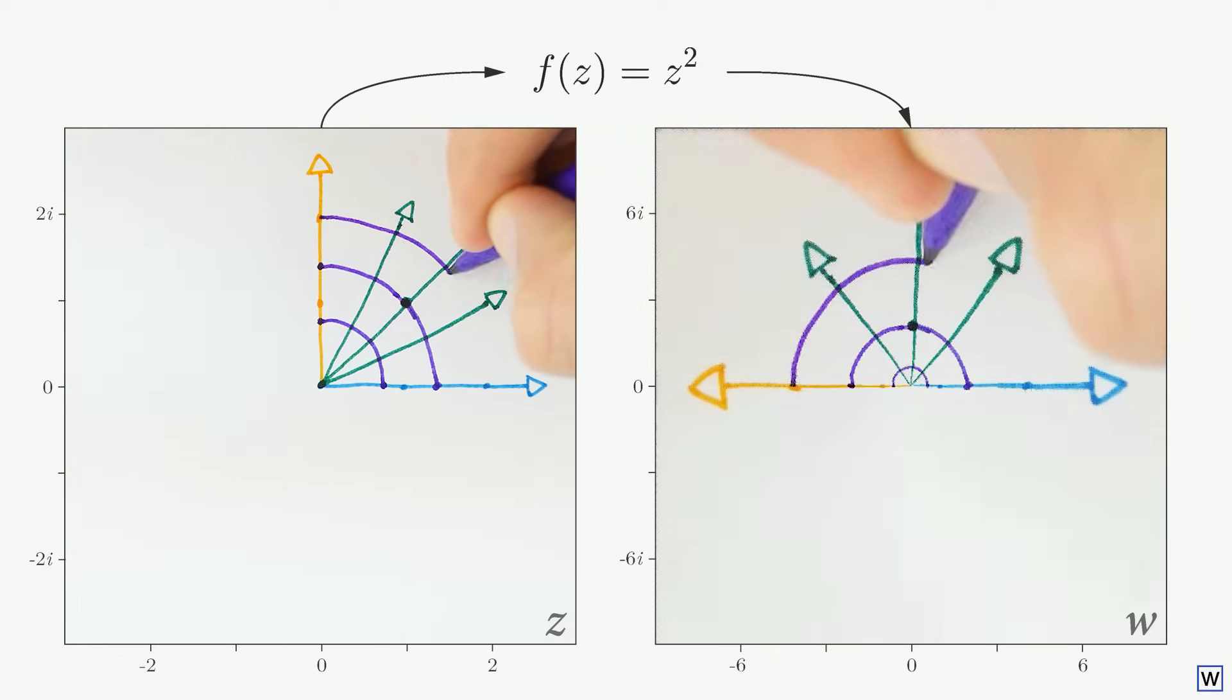So as we expected, our circles are preserved, but their radii are changed. Now we're really getting somewhere. By carefully choosing our input shape, we were able to better understand exactly what our function does to complex numbers. Wonderful.